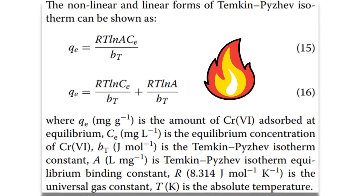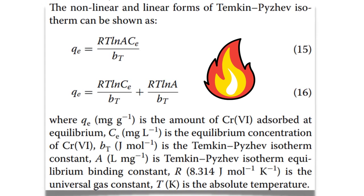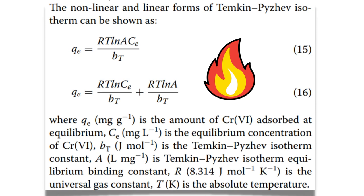Non-linear and linear forms of Temkin-Pyzhev isotherm can be written as: QE equals RT ln A CE divided by BT. And linear form can be written as: QE equals RT ln CE divided by BT plus RT ln A divided by BT.